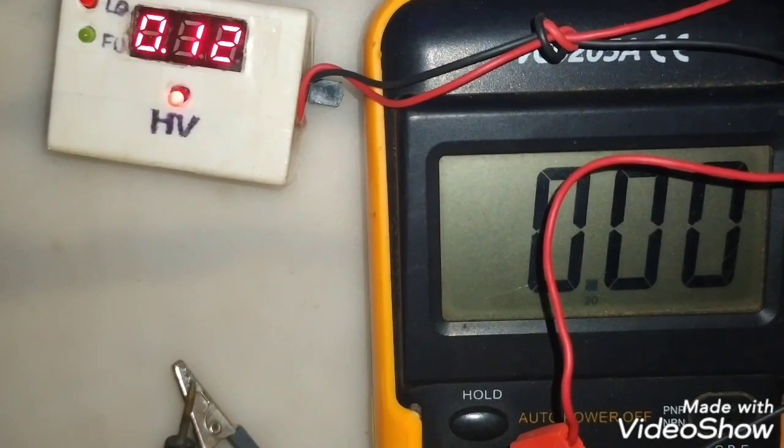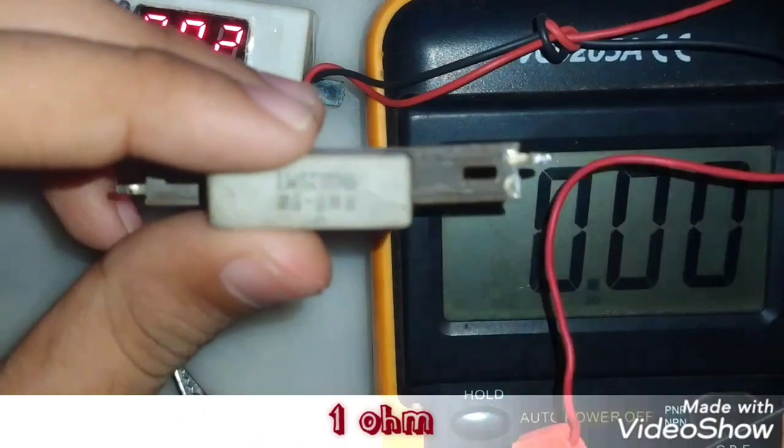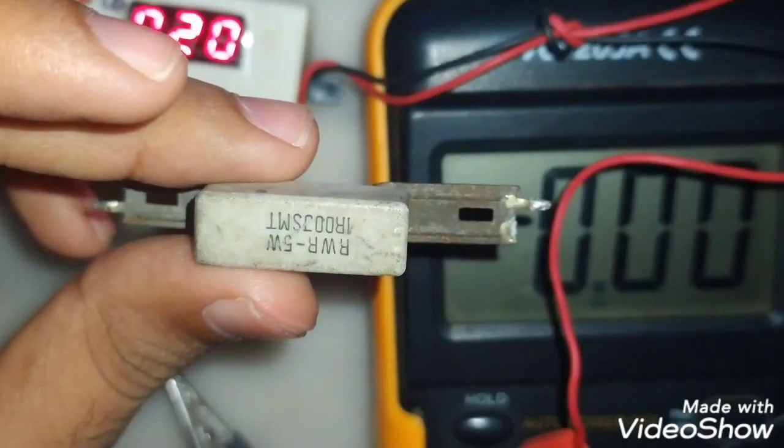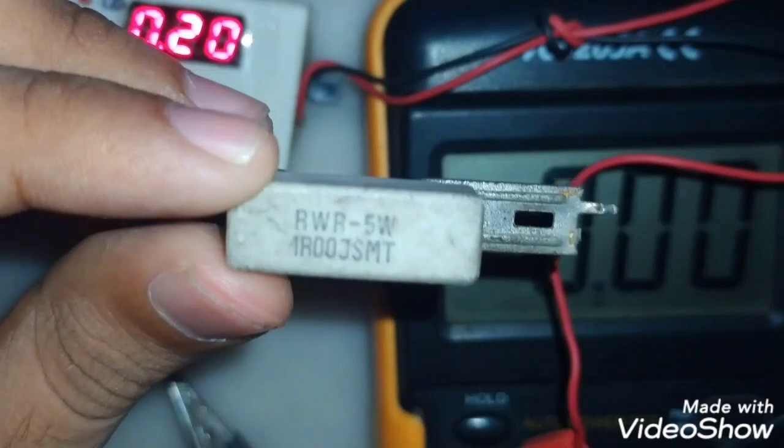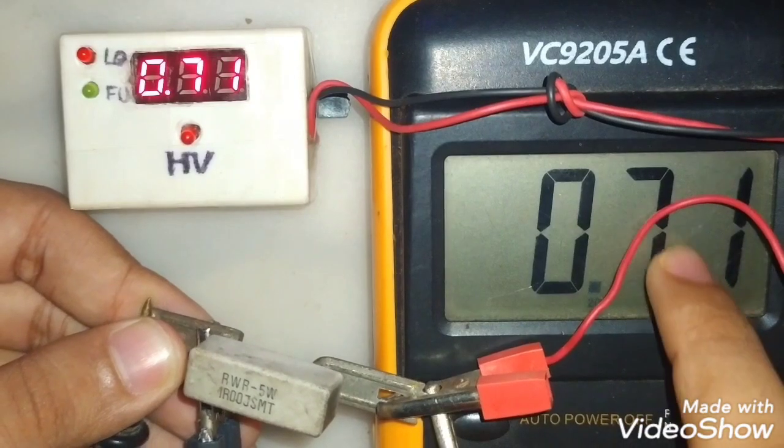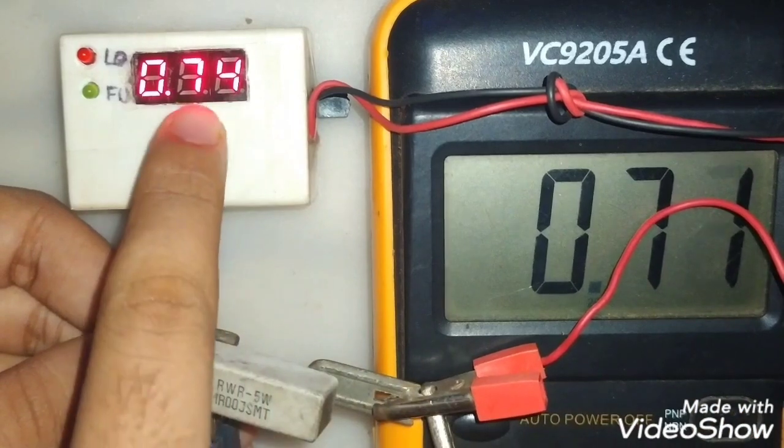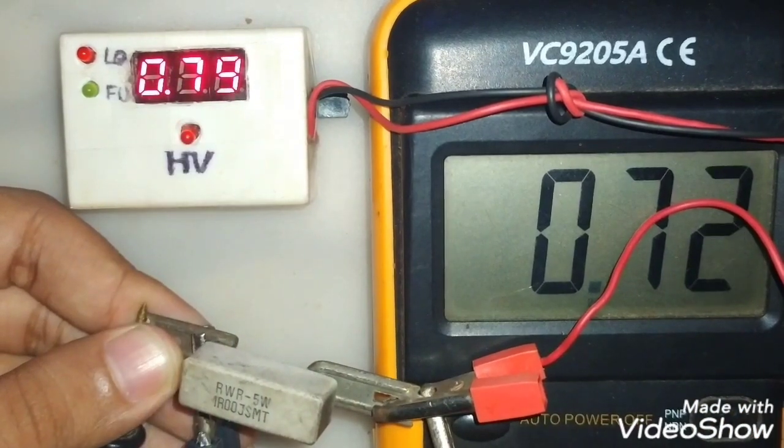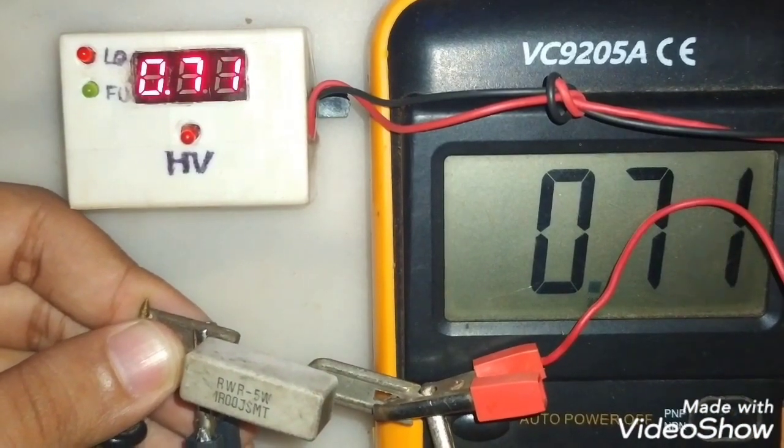Now let's use this 1 ohm resistor to measure the current more accurately. I'm using all 5 watt resistor. You can see the value of current is same as multimeter, so the 1 ohm resistor can give the perfect value for current, but you can only measure current 0 to 2 amp maximum.